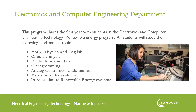This program shares the first year with students in the electronics and computer engineering technology renewable energy program. There are courses listed in first year on the screen. We have two math courses, one physics and one English course. The math course teaches you tools used to design and calculate electrical circuits and electrical technology systems. The physics course helps you understand fundamental principles of how things function, such as electromagnetic fields and how an electric motor works. English focuses on technical writing — the kind of writing you'll use in your work environment.